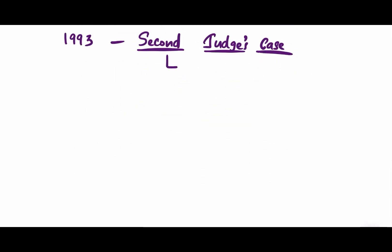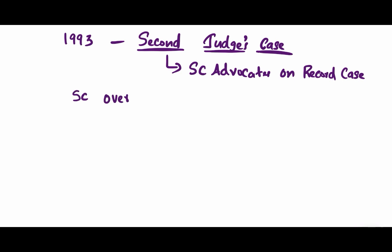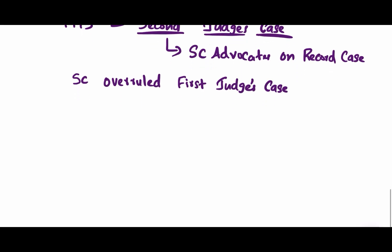In 1993, another petition was filed by the Supreme Court Advocates on Record Association, known as the Second Judges' Case. In this case, the Supreme Court overruled its earlier decision in the First Judges' Case and said the word 'consultation' means 'concurrence' — that is, the President is bound to make decisions only based on consultation with the Supreme Court or the Chief Justice of India.